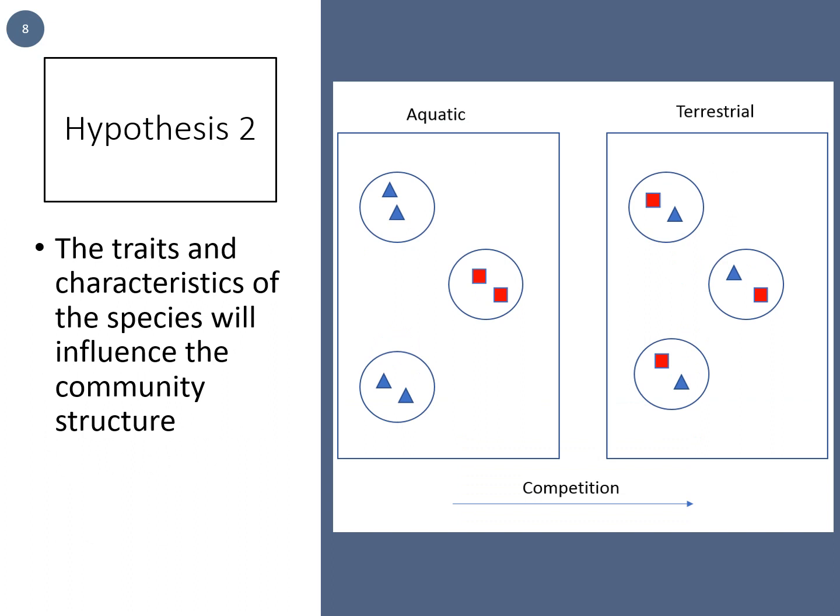The second hypothesis is that the traits and characteristics of the species will influence the phylogenetic community structure. How these traits influence the community structure will depend on the trait. For example, I expect aquatic species to be more clustered than terrestrial species. Some studies have suggested that competition is less important in aquatic environments and that there is more environmental filtering, resulting in a more clustered pattern than in terrestrial environments where competition is more important.